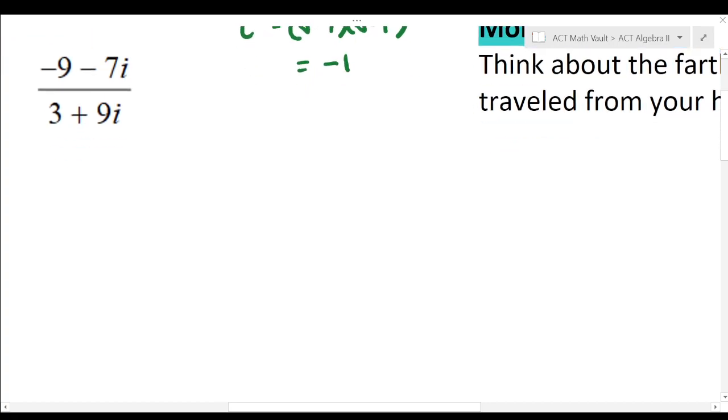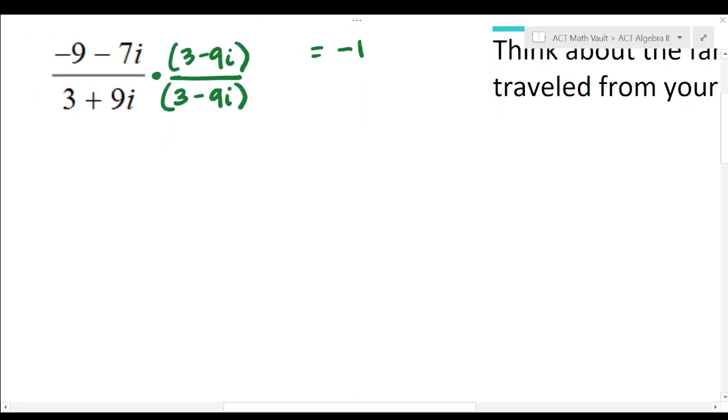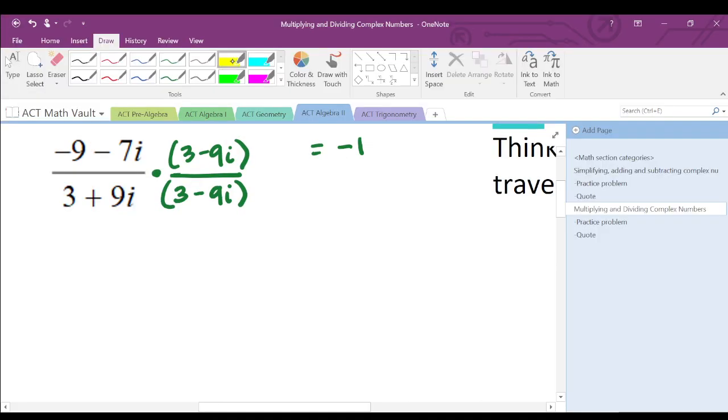The smartest and fastest way to do this is you can multiply a whole fraction by a fraction that simplifies to one whole, meaning like the top and the bottom are the same. And so if I do three minus nine i here and three minus nine i on top, that's fair game because you can multiply something by the same on top and bottom. That's just like multiplying by one. And then the nice thing is something will happen on the bottom here where the i's will actually go away.